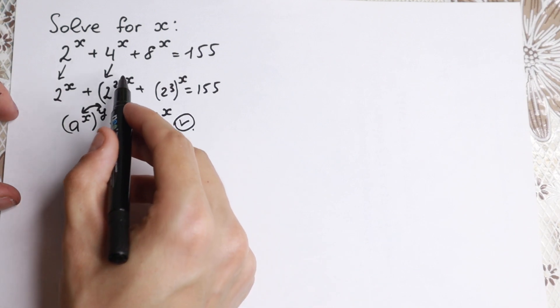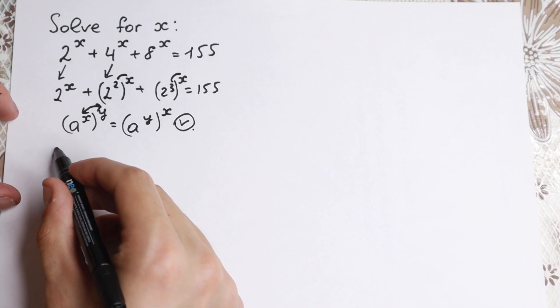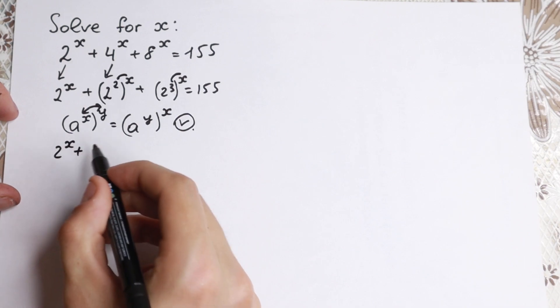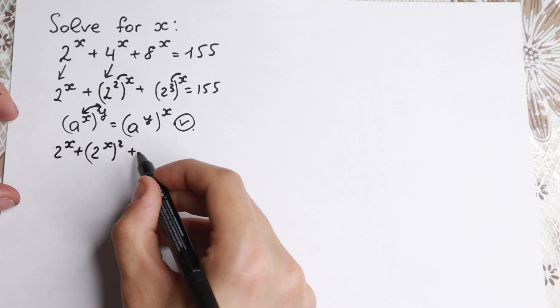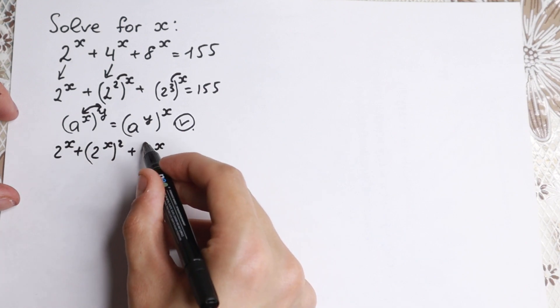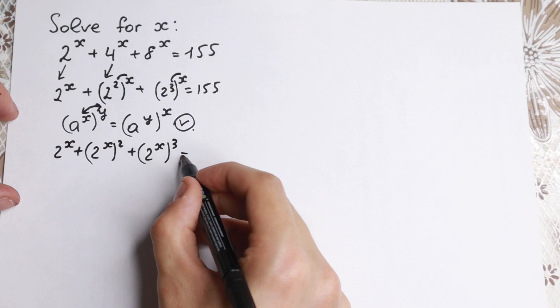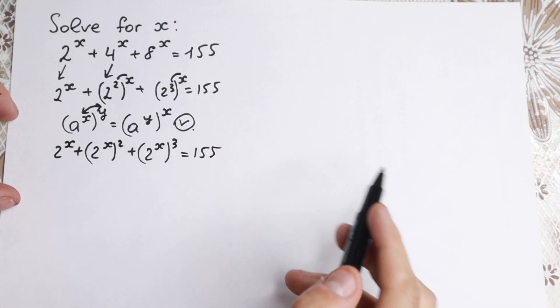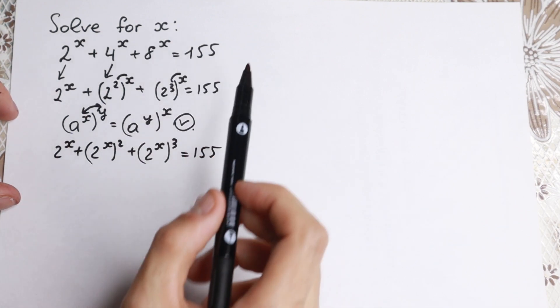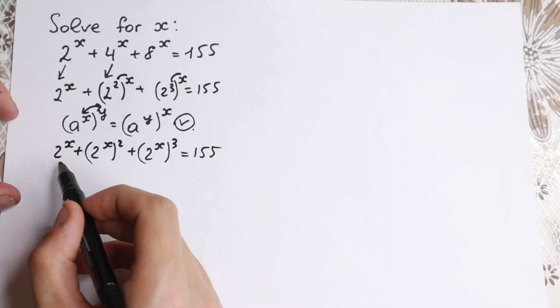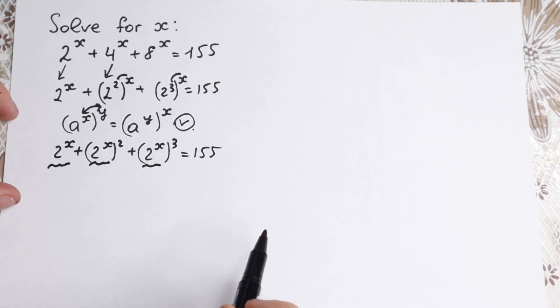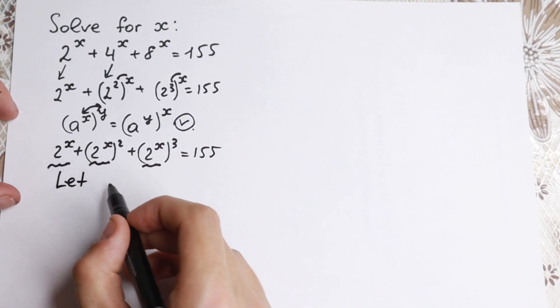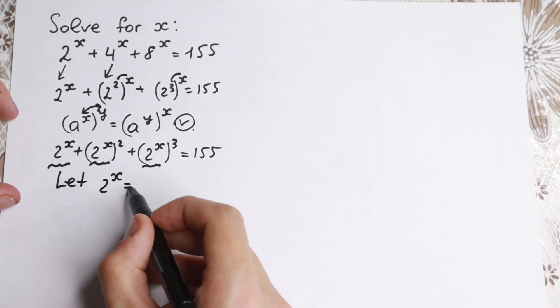So let's use this rule right here, change this one and change this one. We have 2 to the x plus 2 to the x squared and plus 2 to the x cubed equal to 155. And right now we don't have any 8, any 4s, any different powers, different exponents. We have all the same three elements, 2 to the x. So it's really good to write a substitution. Let this 2 to the x be equal to t for example.